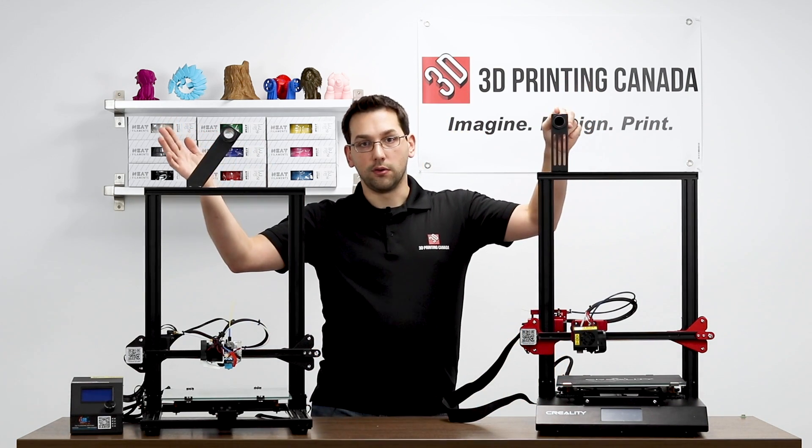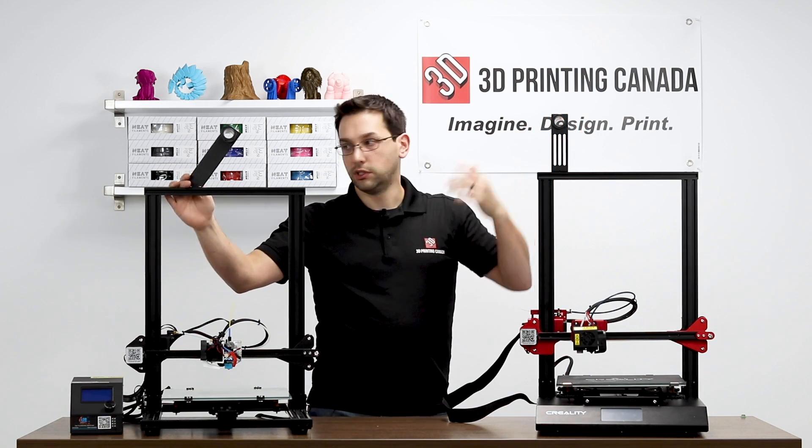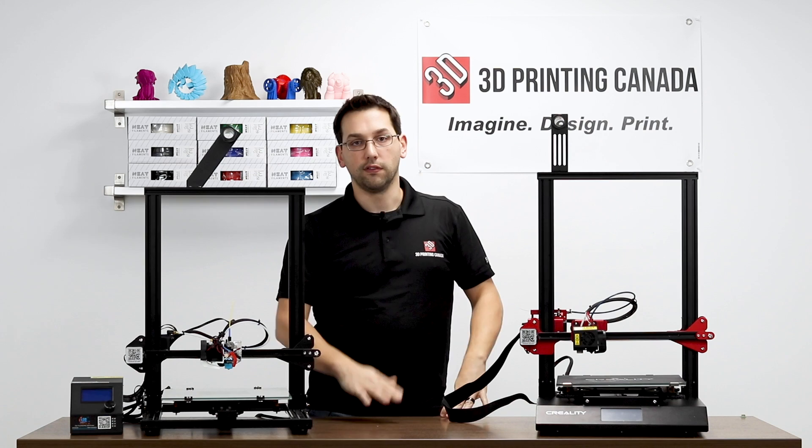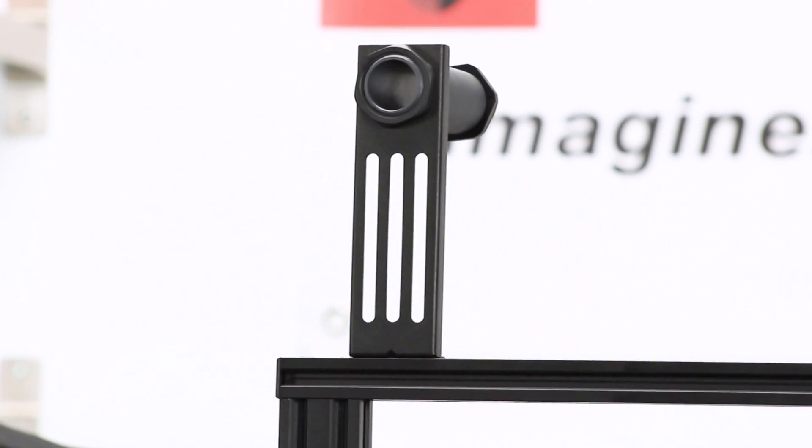They've also decided to use the Ender-3 spool holder, which is just a little bit different than the CR-10 slant one they were using. It makes no difference to me. So let's move on to some of the other components.